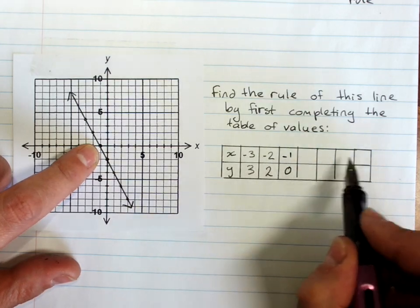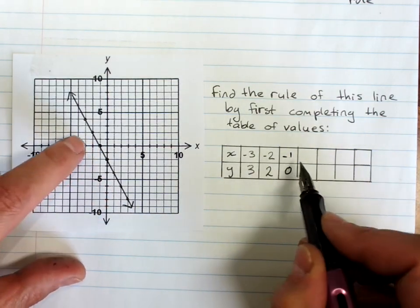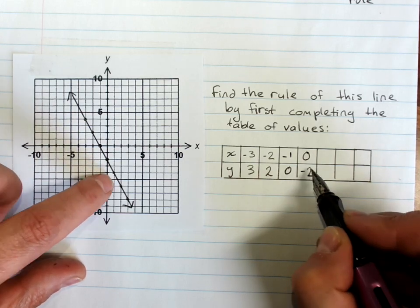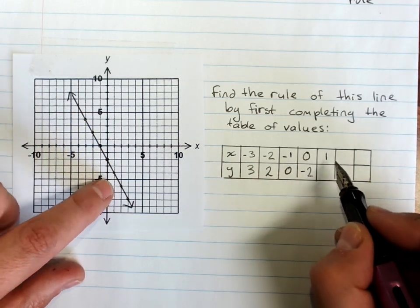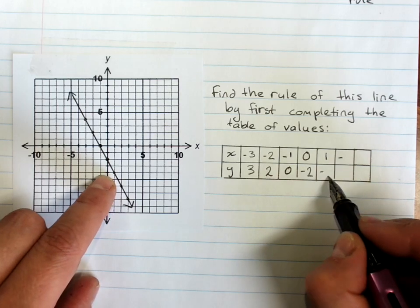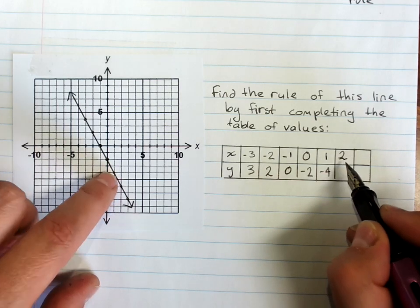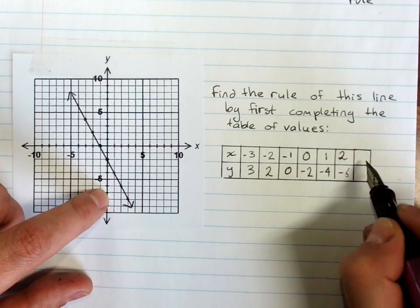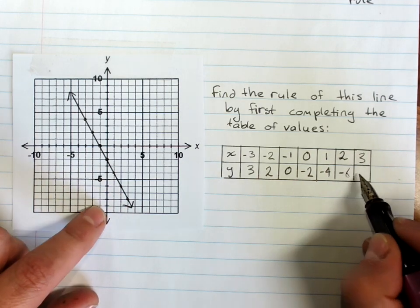If you're worried, then you could fill all this across, assuming all the points were going across in order. Zero, negative two, one, oops, negative four, two, negative six and three, negative eight.